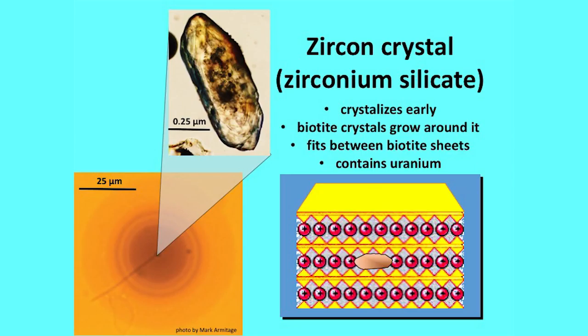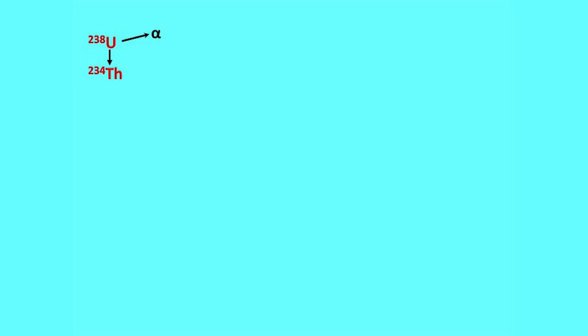The important thing is that zirconium contains uranium — it's radioactive. These little crystals in the middle of the biotite send out radioactive particles. The most common uranium in these minerals is uranium-238, which decays to thorium-234, sending out an alpha particle. That alpha particle is actually the nucleus of a helium atom — two protons and two neutrons — a fairly heavy particle shot out of the uranium nucleus as it decays.